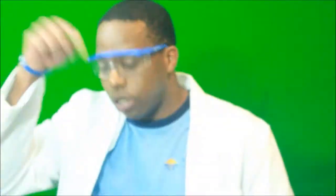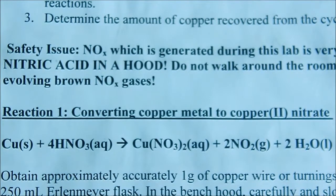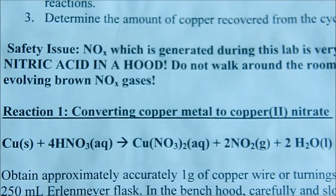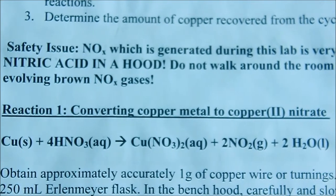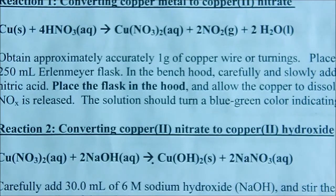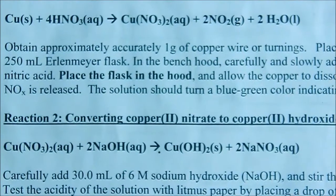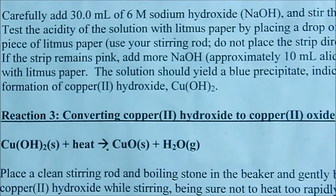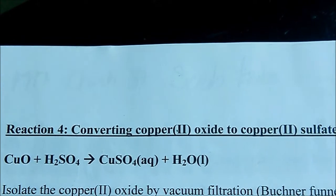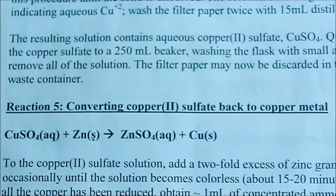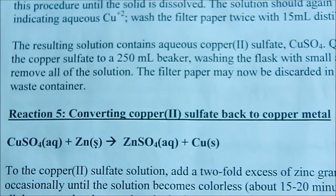Add the Nitric Acid under the hood. Now convert Copper Metal to Copper Nitrate. Then Copper Nitrate to Copper Hydroxide. Then Copper Hydroxide to Copper Oxide. Then Copper Oxide to Copper Sulphate. Then Copper Sulphate back to Copper Metal.